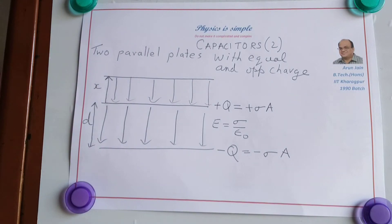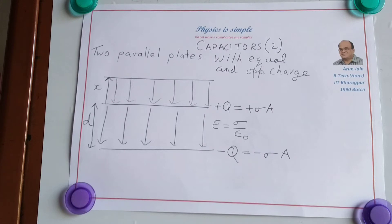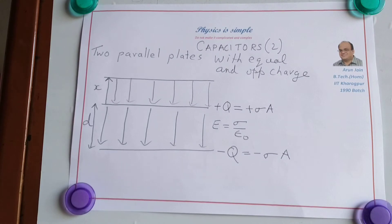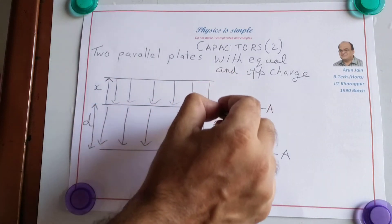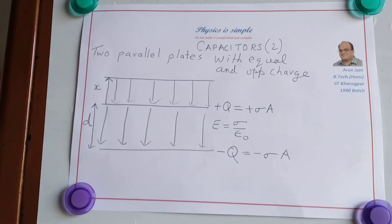The electric field between two parallel plates with equal and opposite charge is confined to the region between the plates, and the electric field outside is zero. Now if we increase the separation between the plates, the electric field gets created in this new region, and that electric field is created because of the work done by us.